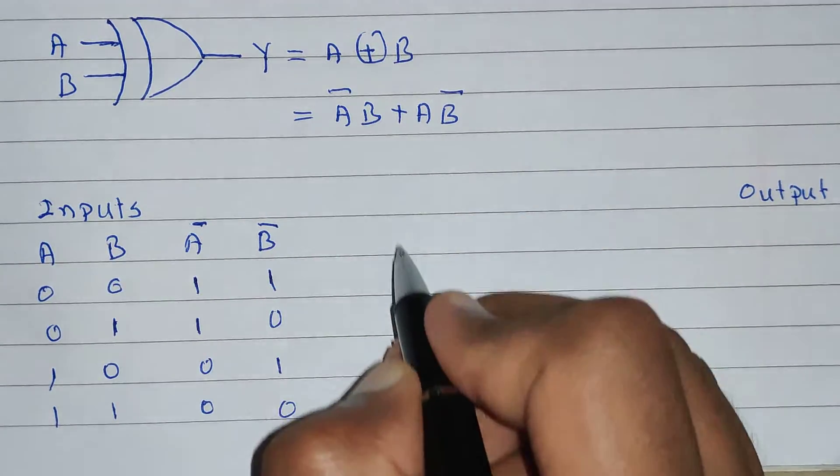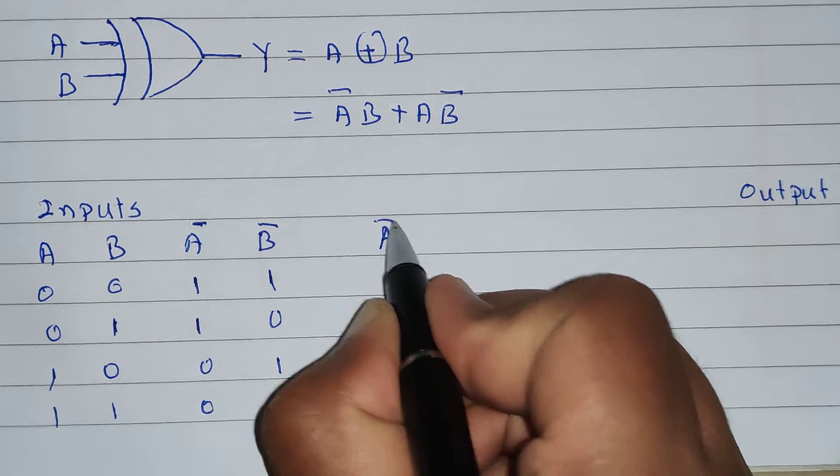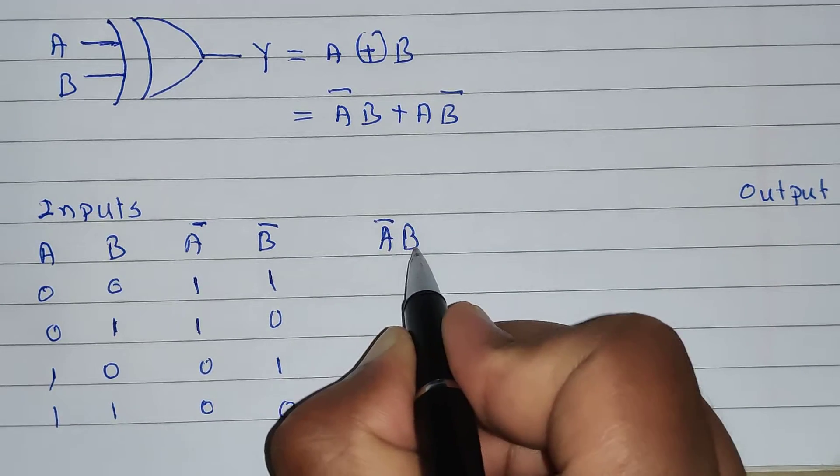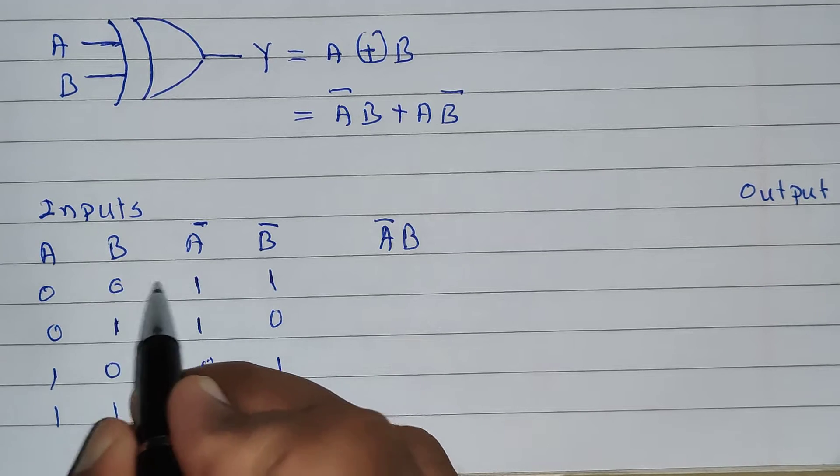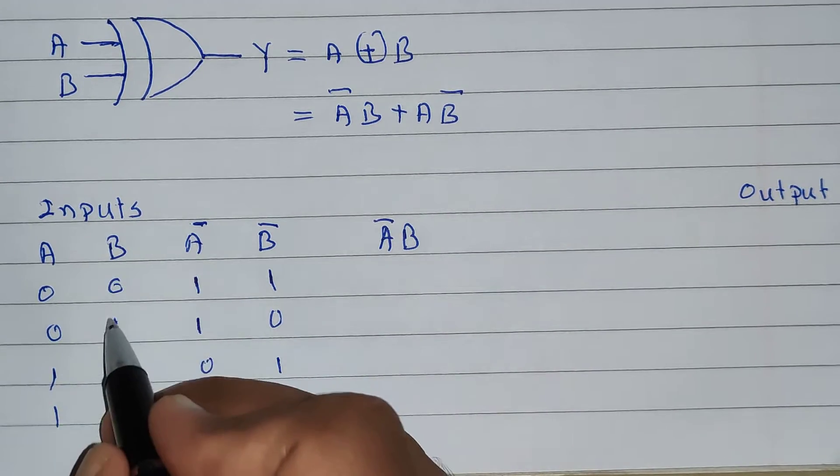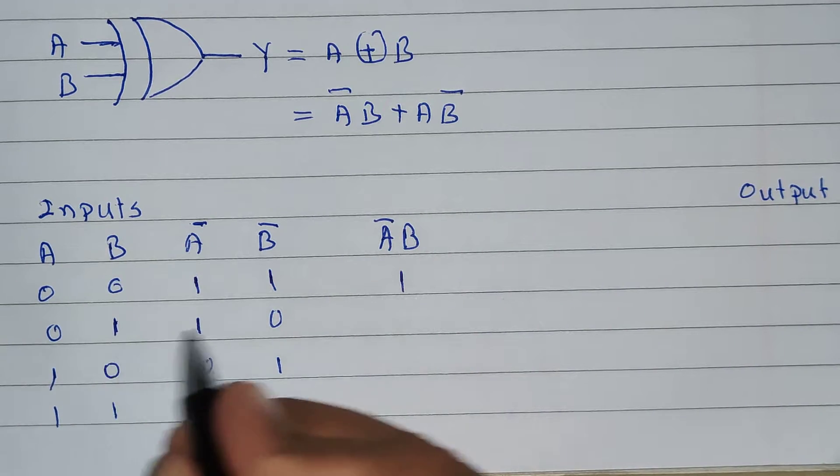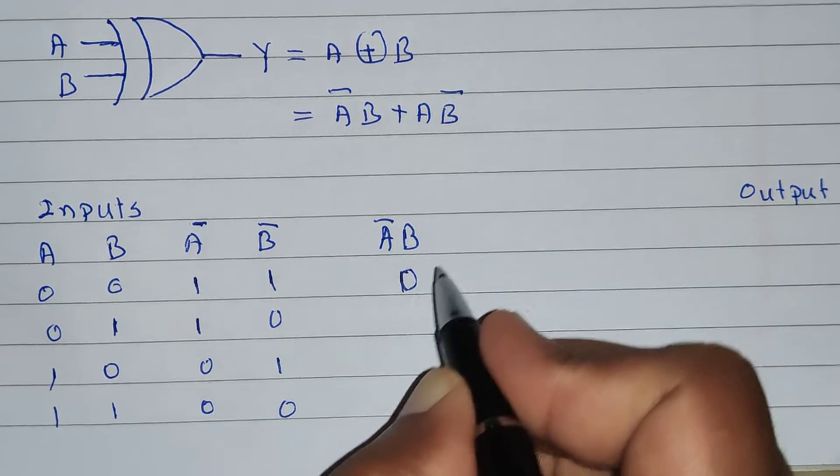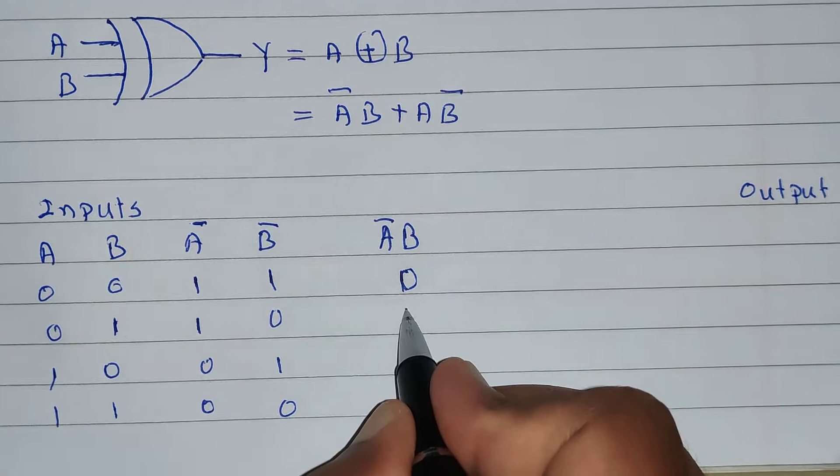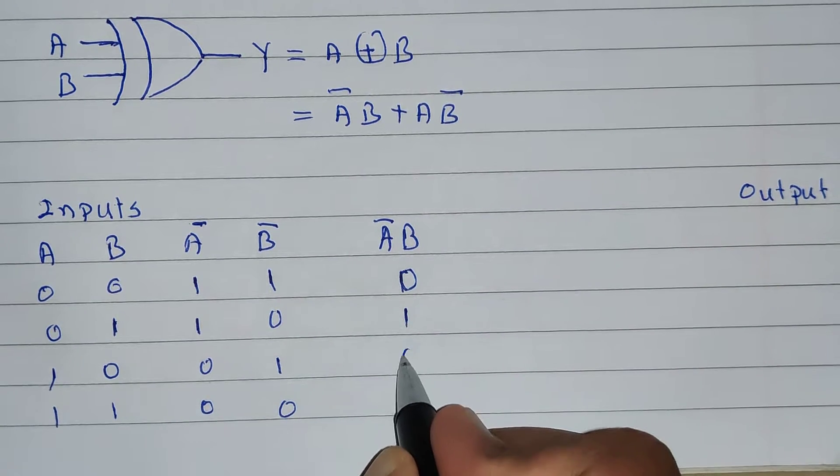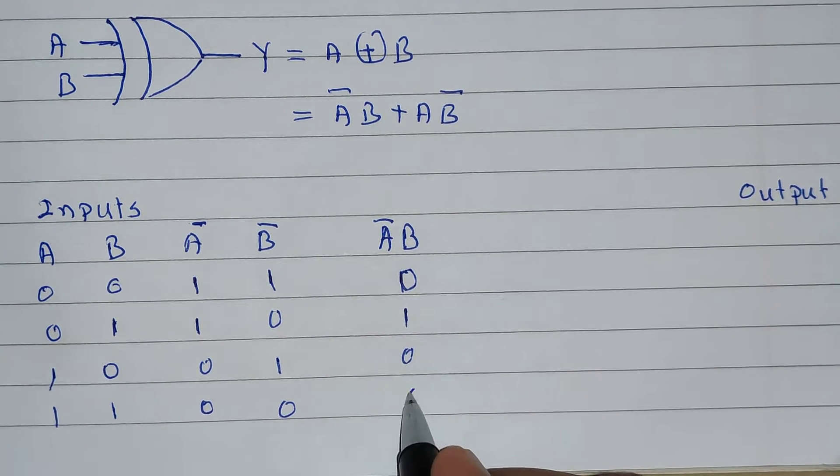Now, we will need the first term, which is A bar into B. A bar into B means multiplication of these two columns. 1 into 0 is 0, 1 into 1 is 1, 0 into 0 is 0, 0 into 1 is 0.